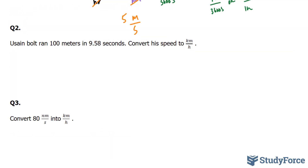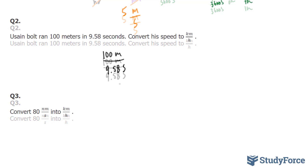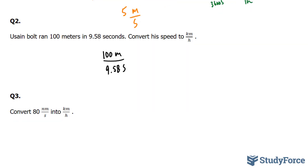Question number 2 asks us: Usain Bolt ran 100 meters in 9.58 seconds — convert his speed to kilometers per hour. So he ran 100 meters per every 9.58 seconds. We're going to use the same conversion factors as before. There are 1,000 meters in 1 kilometer, so if we multiply by 1 kilometer over 1,000 meters, the meters units will cancel out.